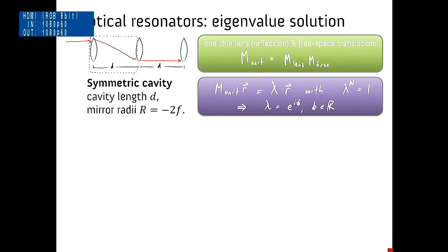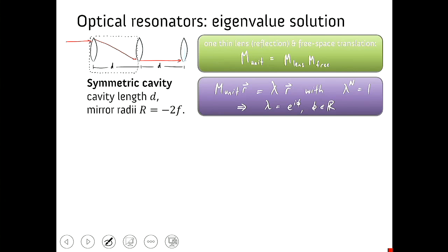Let's have a look at a simple example of the symmetric cavity with concave mirrors or convex lenses. Its cavity length is d and the mirror radius is r. So we're going to write down the unit cell for this cavity as a product of two things: the lens transfer matrix which is this one here, and the free space propagation through a distance d. That's it.